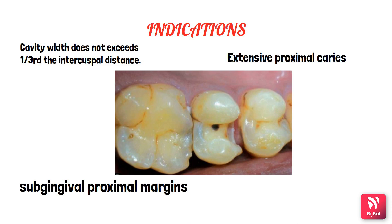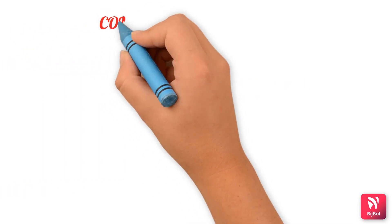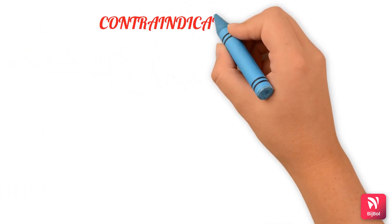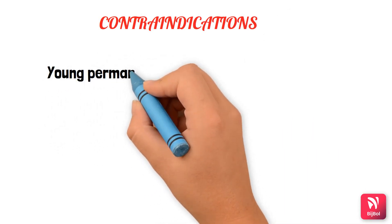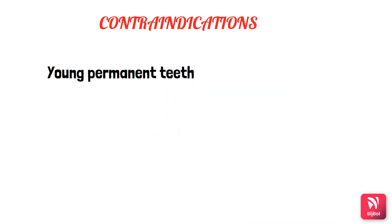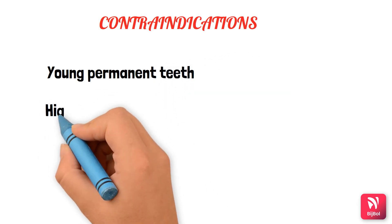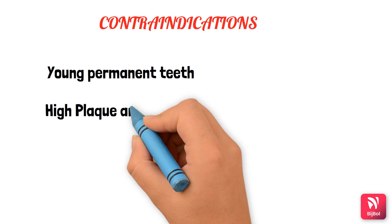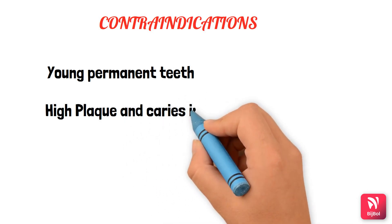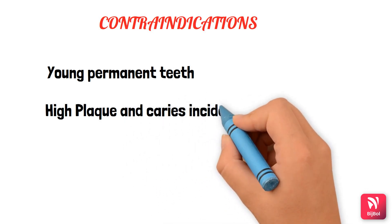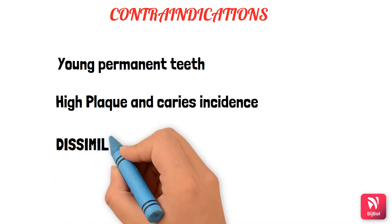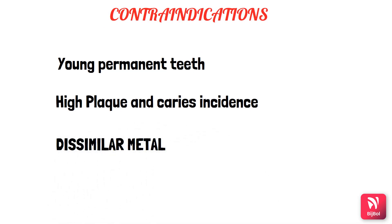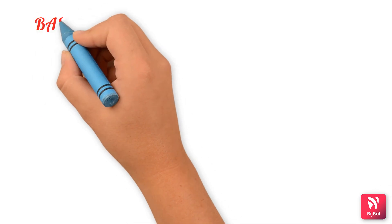Regarding contraindications: in young permanent teeth, inlays are avoided due to increased chances of iatrogenic pulpal exposure caused by the presence of high pulp horns and also due to the high plaque and caries index. They are also avoided when adjacent or opposing teeth have dissimilar metallic restorations, to prevent galvanism.